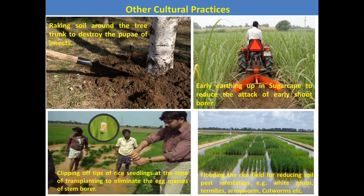Early earthing up in sugarcane and potato: earthing up means supporting the plant with soil mounded around it. In sugarcane, early earthing up helps reduce early shoot borer infestation. In potato, it helps reduce infestation of potato tuber moth — both major pests of those crops.